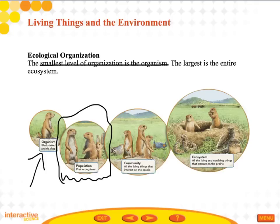The third level is the community, which has all the living things that interact on the prairie. There's a bird and other creatures — all of these organisms together with the prairie dog make up the community. The last part is the ecosystem itself, which includes all of those living creatures — the biotic factors.